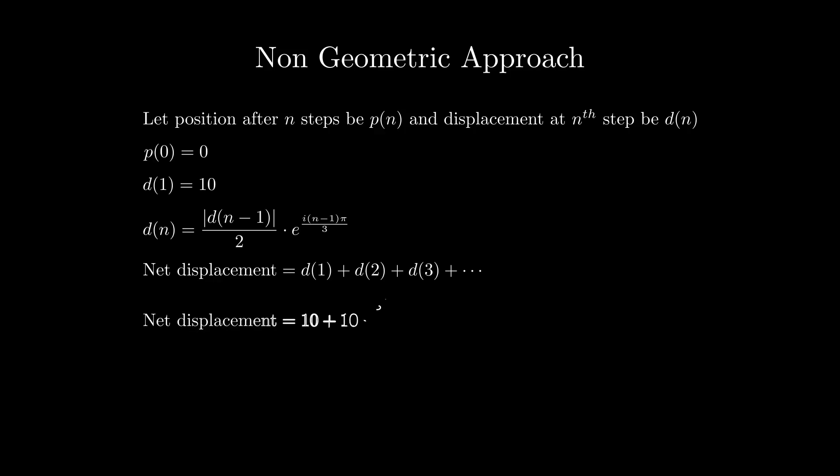The net displacement will obviously be the sum of all these displacements, which will be equal to 10 plus 10 e^(i pi/3) / 2 plus and so on, which if we add to the initial position 0 will give us P infinity. Let's take a closer look at the sum. We have this infinite GP which we can apply the formula A / (1 - r) to.